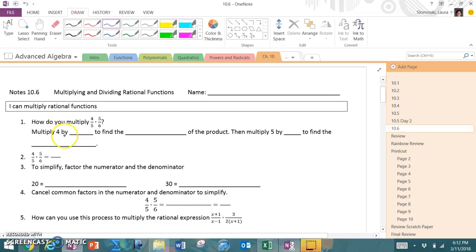We're going to start with just reviewing how to multiply two fractions together. So in this example, 4 fifths times 5 sixths, I would multiply the 4 by the 5 to find the numerator, and then multiply 5 times 6 to find the denominator. So top times top, bottom times bottom.